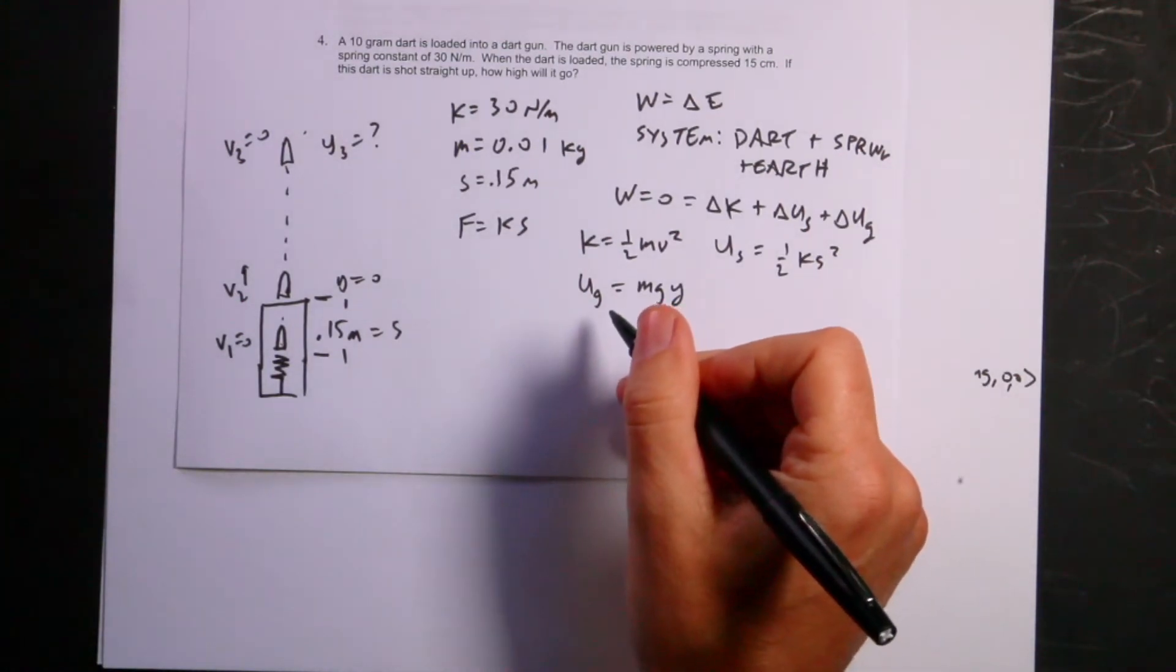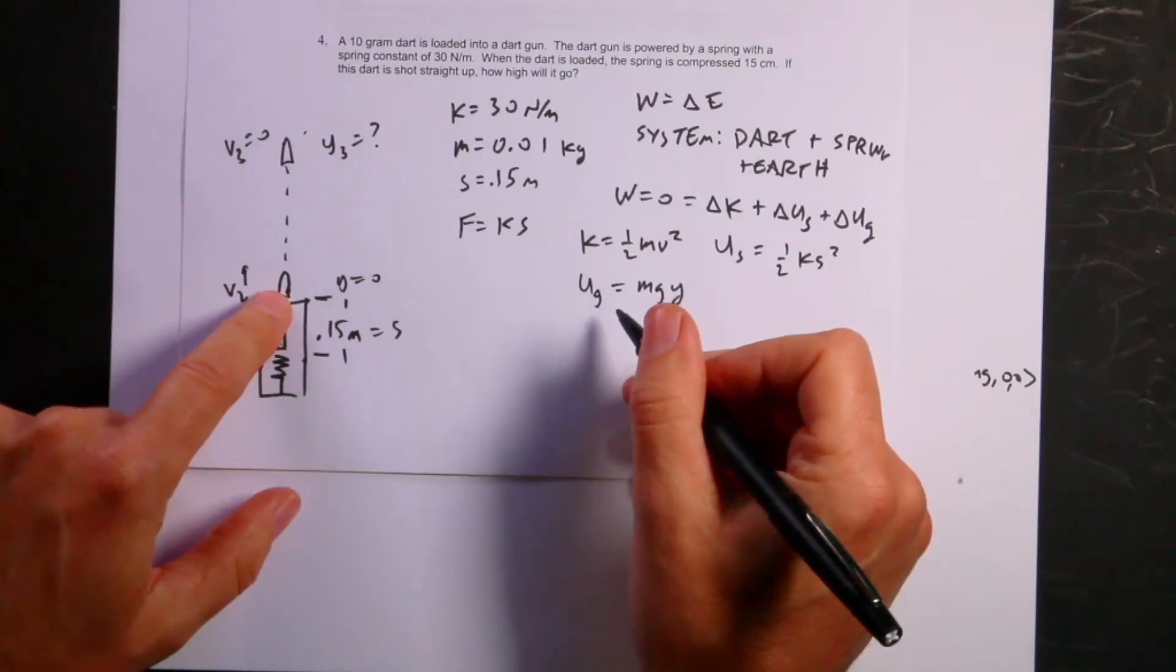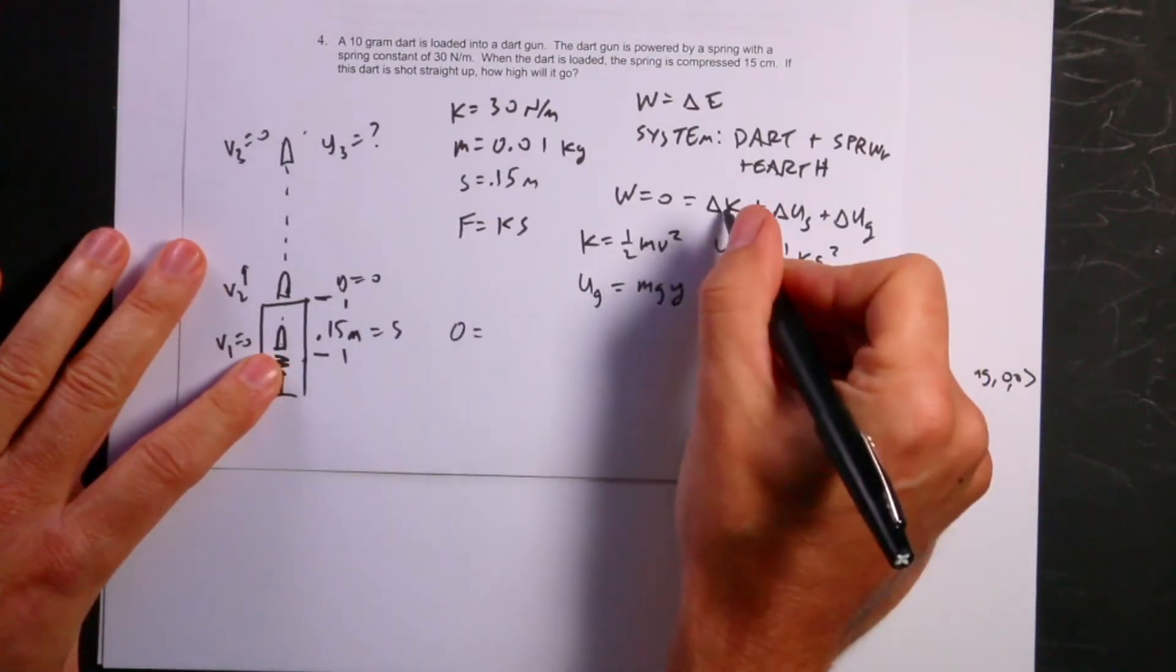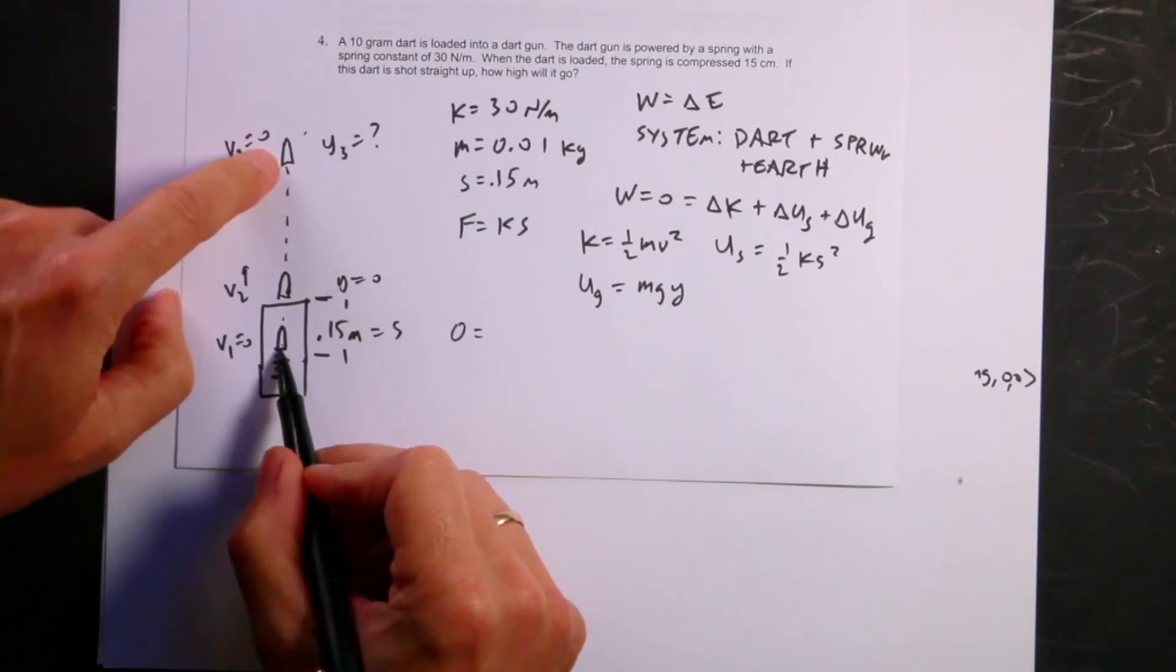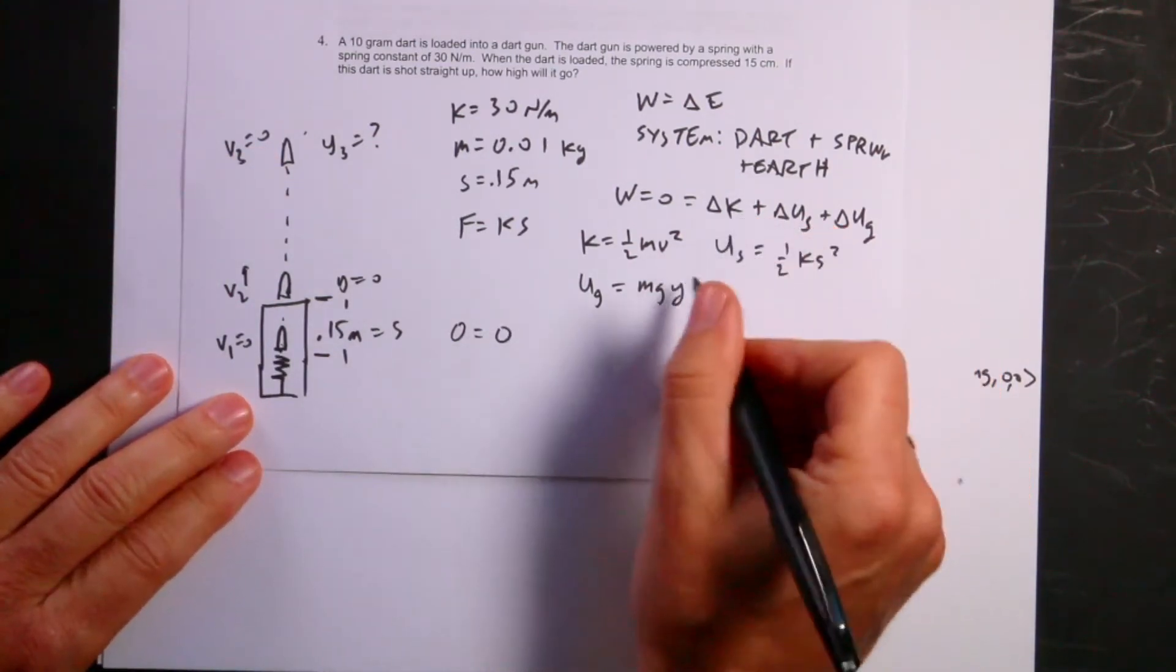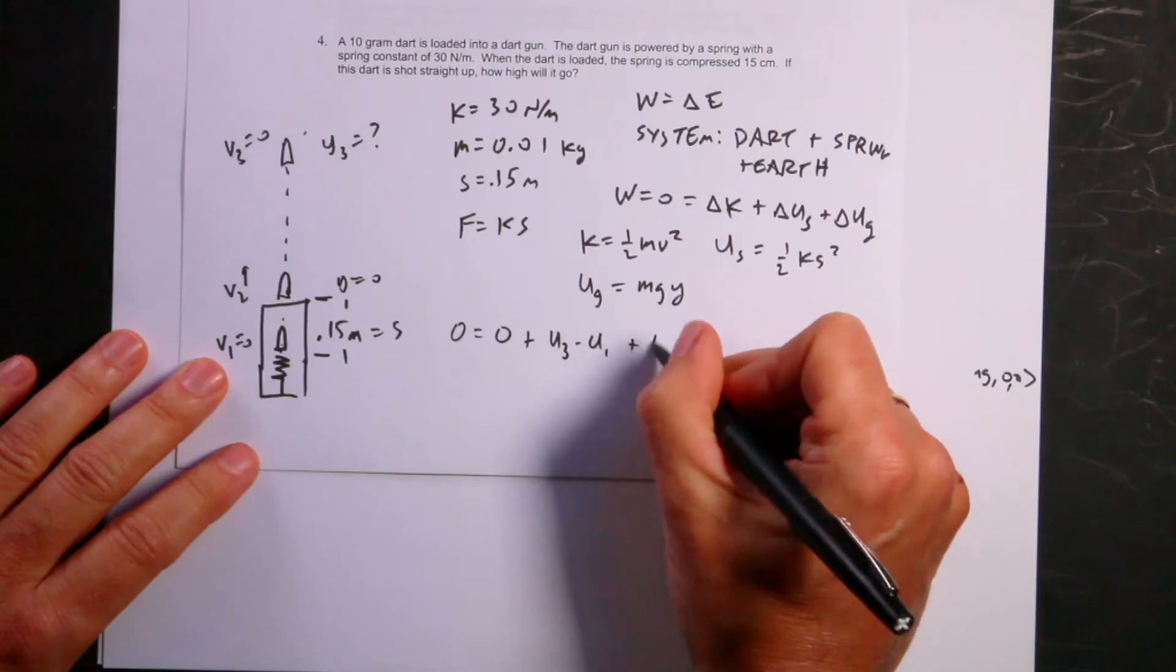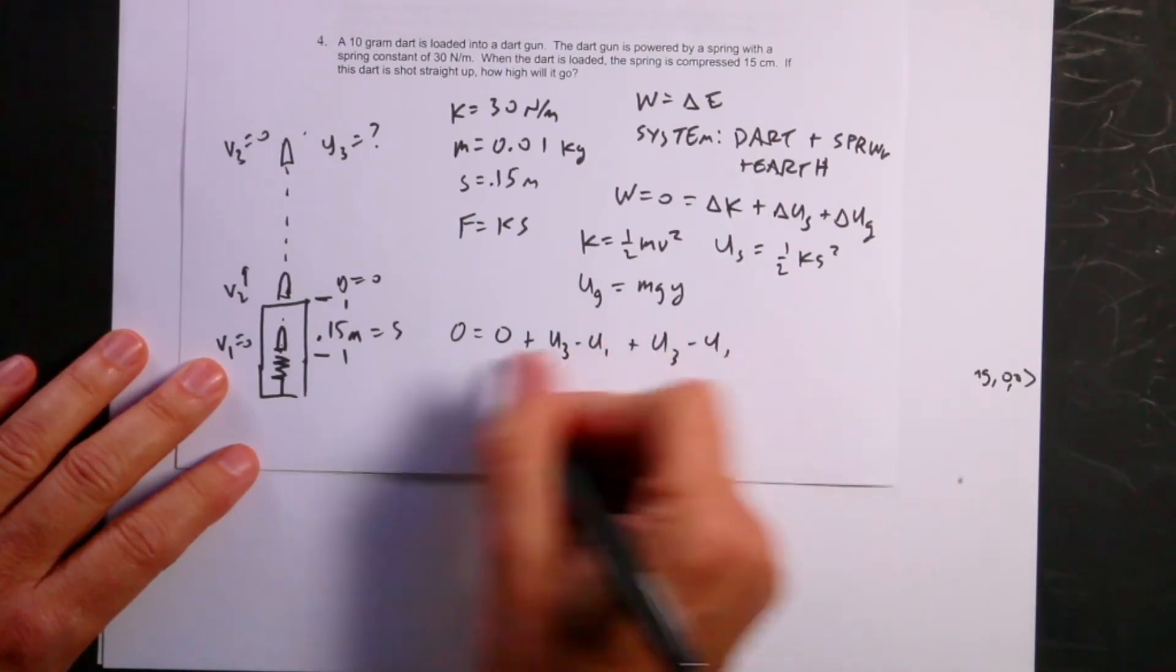Kinetic energy is one-half mv squared. Spring potential energy is one-half ks squared. And gravitational potential energy is mgy. Now both of these two don't really matter. It only changes the potential that we actually measure. But I called that y equals zero so I can proceed. We could use this to find the velocity right there, but who cares? I can just go straight from here to there.